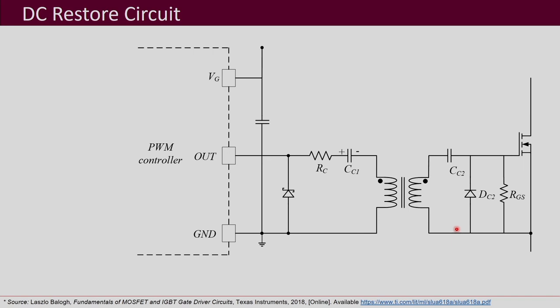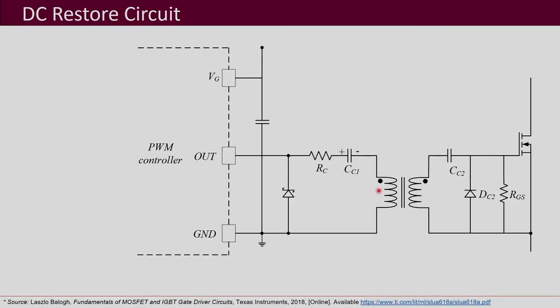With this arrangement, pulse transformers work very well. There are several advantages: you do not need a floating supply, you do not need a separate DC supply, and both power and signal can be transferred through the pulse transformer itself. You also get very good noise immunity because transformers have good levels of noise immunity.